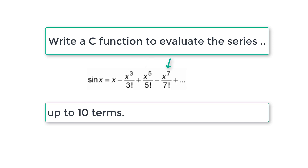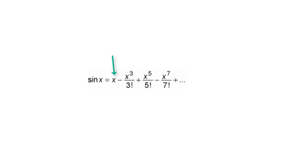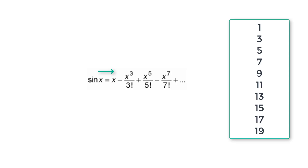The first term is x, which can be written as x raised to 1 divided by 1 factorial. Rewrite the equation by modifying the first term. Observe the exponents: 1, 3, 5, 7 — all odd numbers with a gap of 2 between them — going up to 19. These are the 10 numbers we will be dealing with.